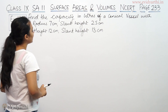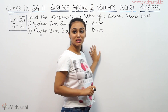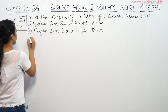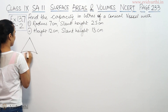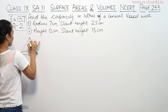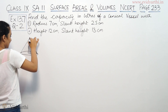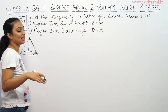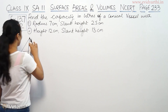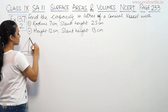We need to find the capacity in liters of a conical vessel with radius 7cm and a given slant height. This is a conical vessel with radius 7cm. This is the vertical height and this is the slant height. When we talk about vertical height, that means the straight value. If we are talking about slant height, then we use the slant value.